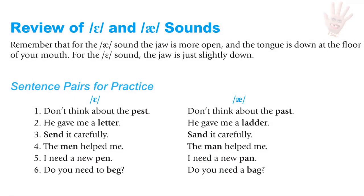Review of E and A sounds. Remember that for the E sound the jaw is more open and the tongue is down at the floor of your mouth, and for the A sound the jaw is just slightly down. The following pairs of sentences are the same except the first has a word with an E sound and the second has a word with an A sound.